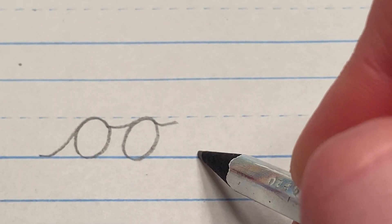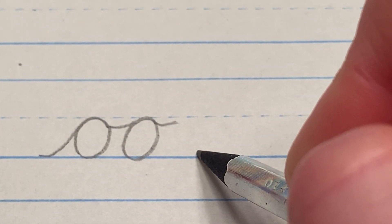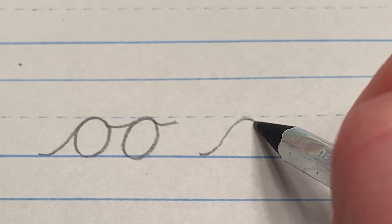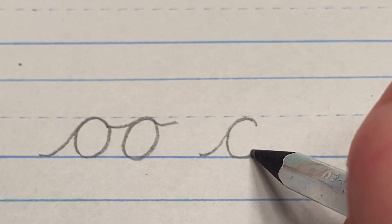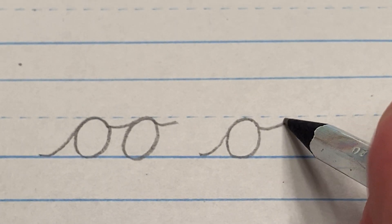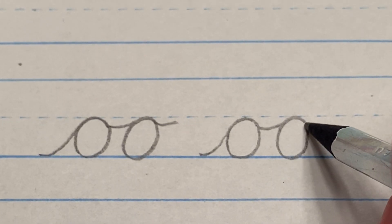Let's try again. You start at the floor, you go up to the middle, around, connect, and then go straight across. Just start making your next O.